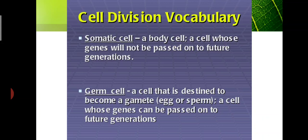We need to understand what somatic cell and germ cell mean, as we will be using these words throughout this part. A somatic cell is a body cell whose genes will not be passed on to future generations. A germ cell is destined to become a gamete — a cell whose genes can be passed on to another generation so that a new baby will be formed.